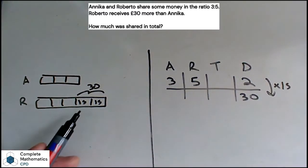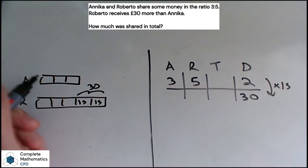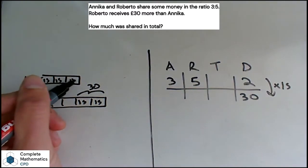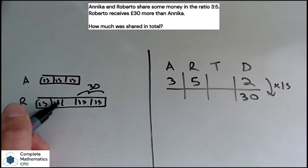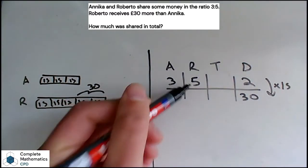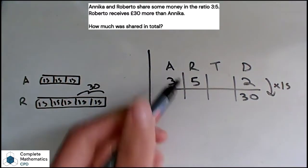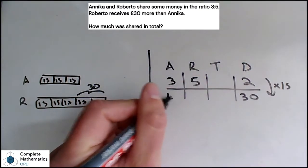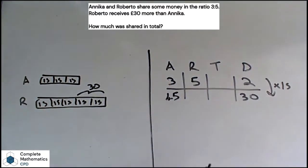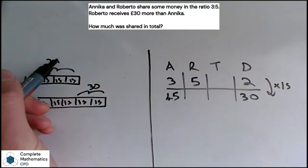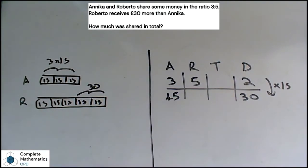So in the bar model, once we know each part is £15, we can fill the rest in with 15s if we want. With the ratio table, each of these numbers needs multiplying by 15. So 3 times 15 gives me 45 there. Where does that 45 sit in my bar model? Well, here we've done three lots of 15 to get the 45.